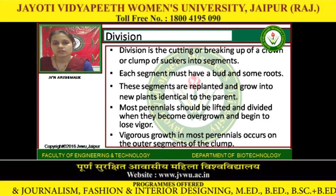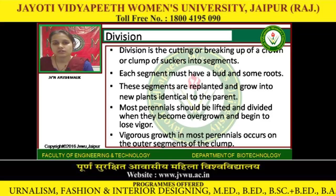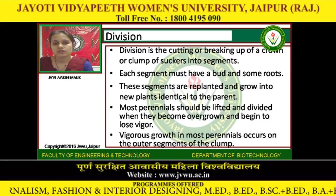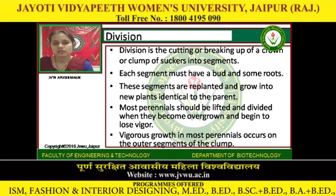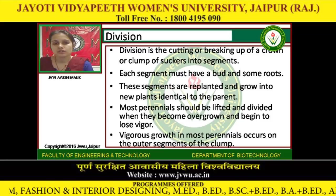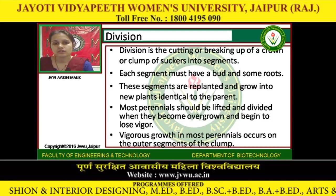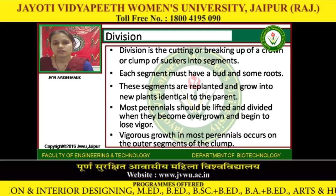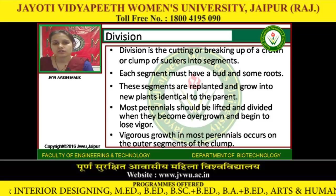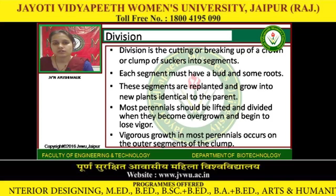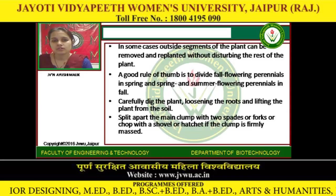Division is the cutting or breaking up of a crown or clump of suckers into segments. Each segment must have a bud and some roots. These segments are replanted and grow into new plants identical to the parent. Most perennials should be lifted and divided when they become overgrown and begin to lose vigor. Vigorous growth in most perennials occurs on the outer segments of the plant.